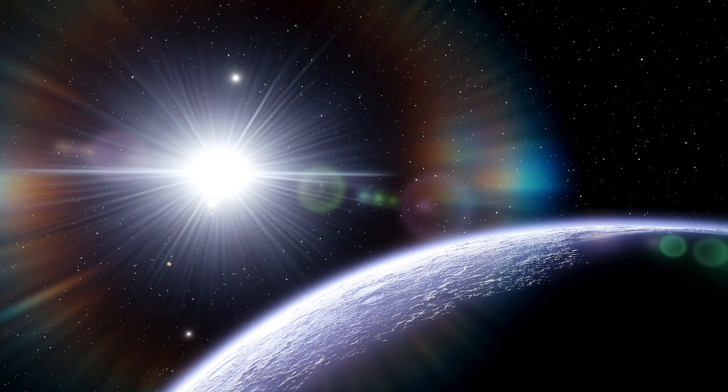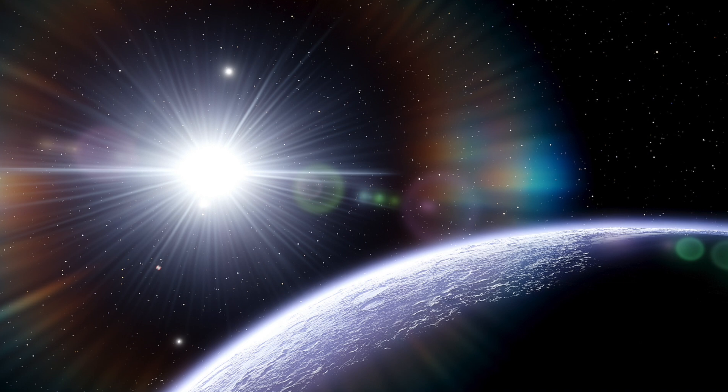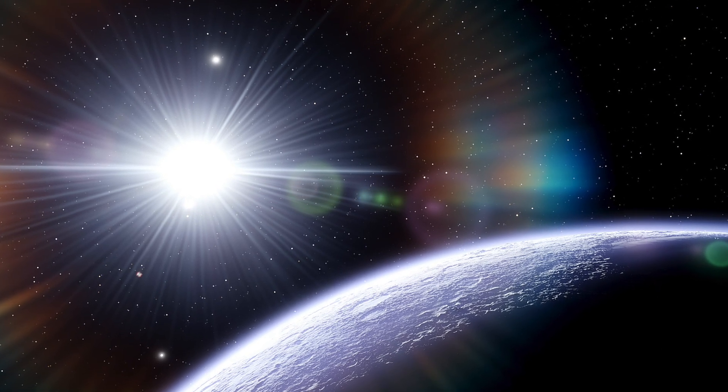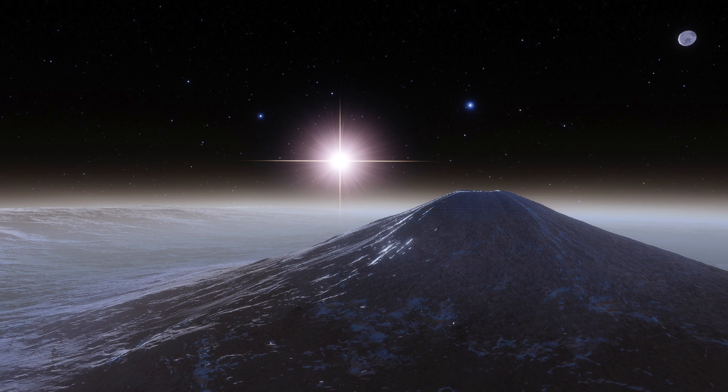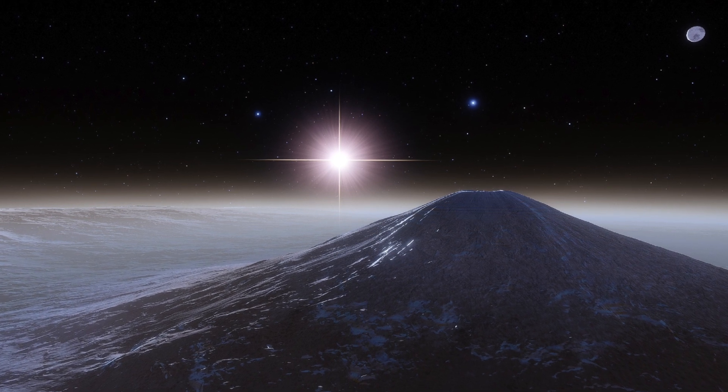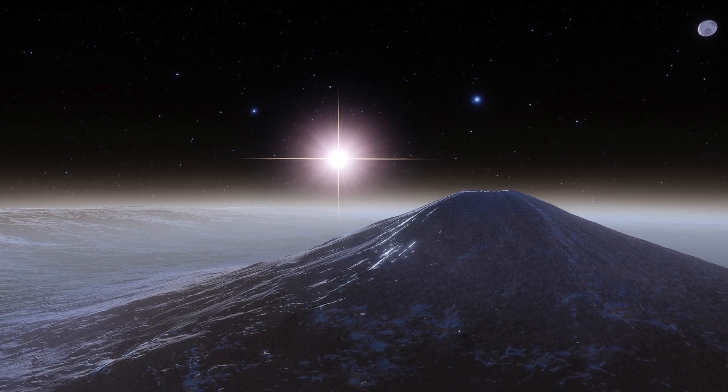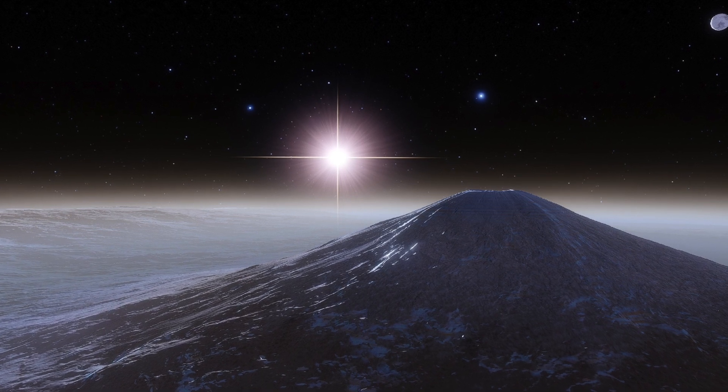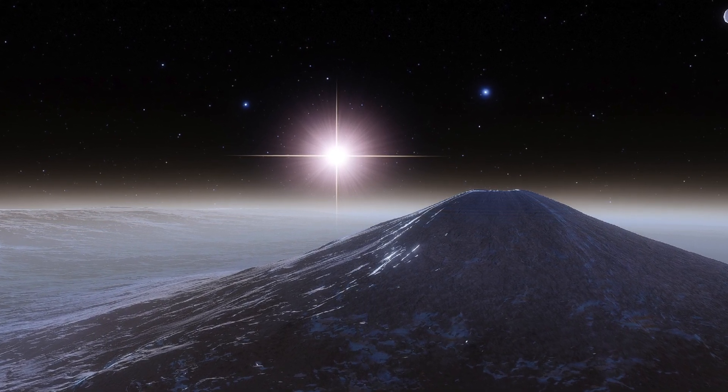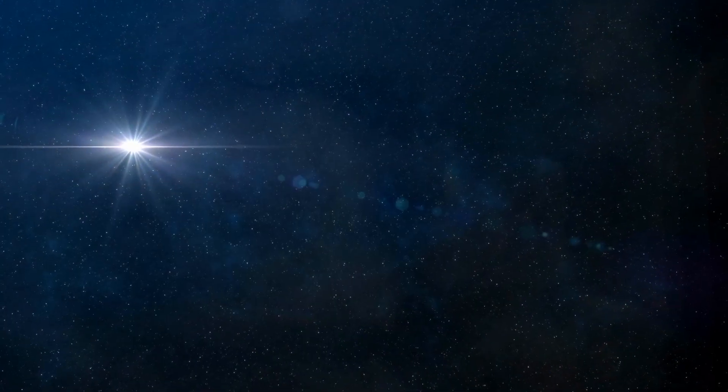The binary stars at the center of this triple star system together have a mass of about 12 times of the Sun. They take a little more than a day to orbit around each other. The larger outside star is about 16 times more massive than the Sun and revolves around the pair once every 52 days. This is an impressive speed considering their size.